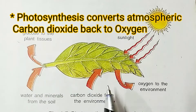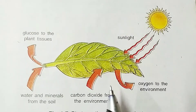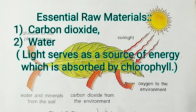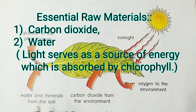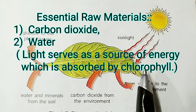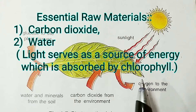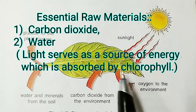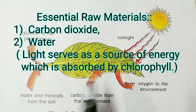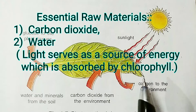From this figure, you can understand that there are two basic raw materials required for this process: one is carbon dioxide and another is water. So carbon dioxide and water serve as raw materials, and light — generally sunlight — acts as a source of energy. Chlorophyll pigments help in absorbing the sunlight. During the process, carbon dioxide and water act as raw materials and sunlight serves as a source of energy.